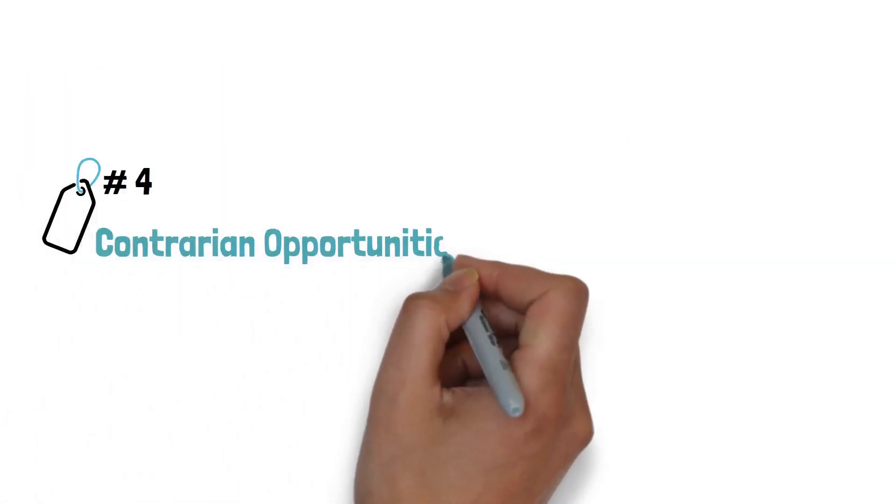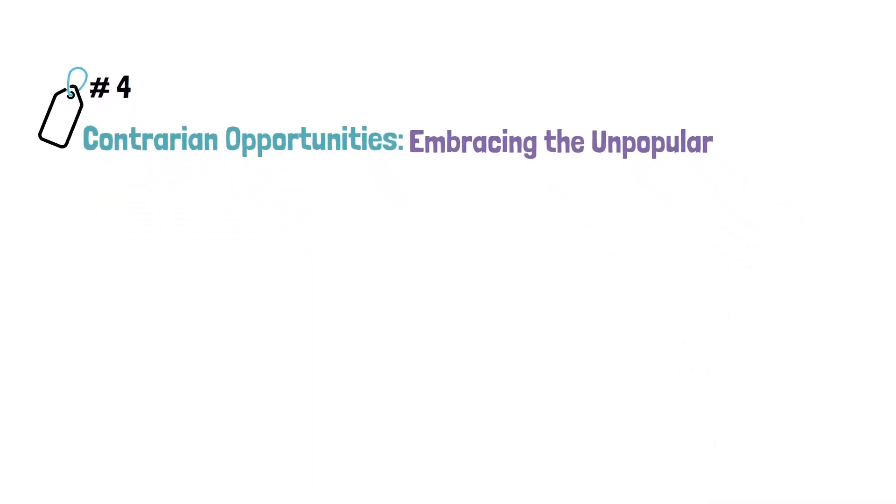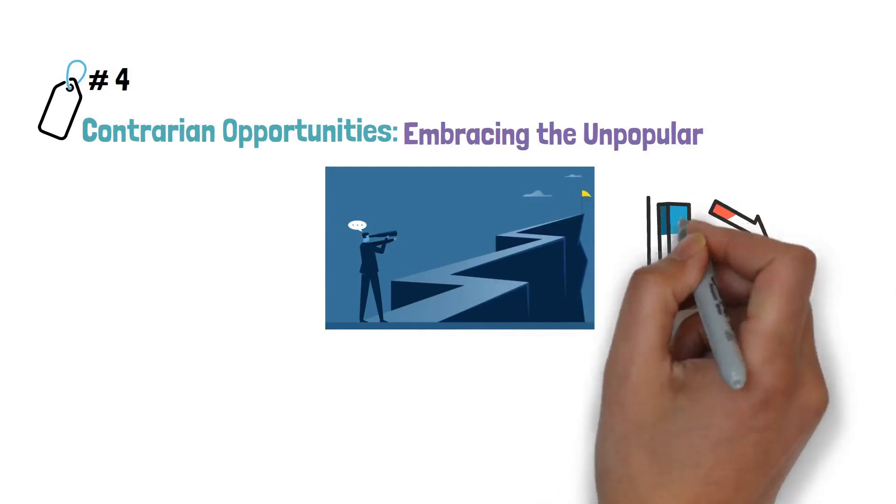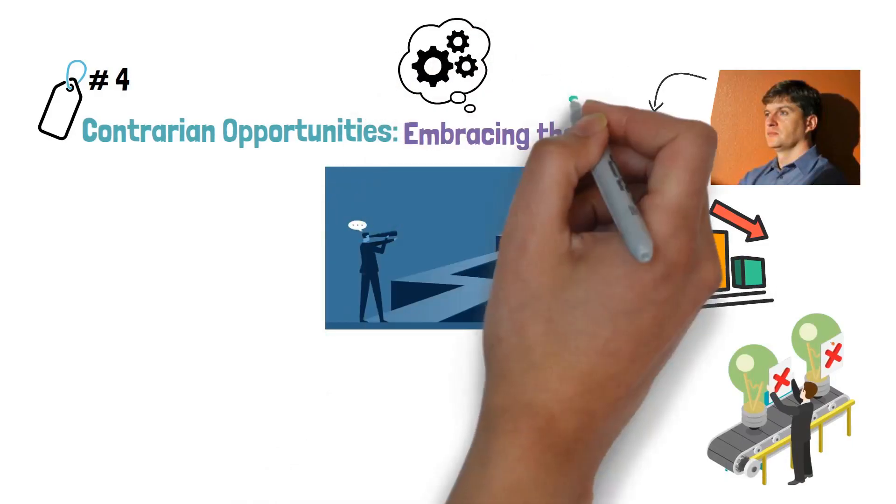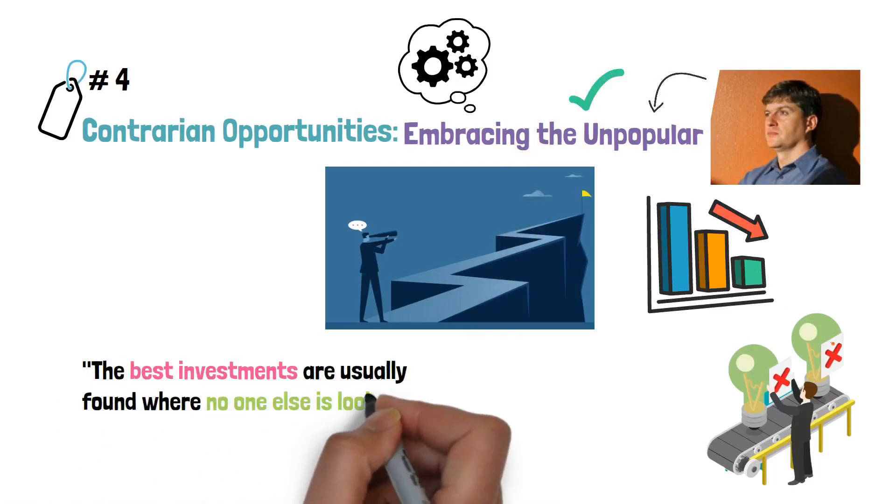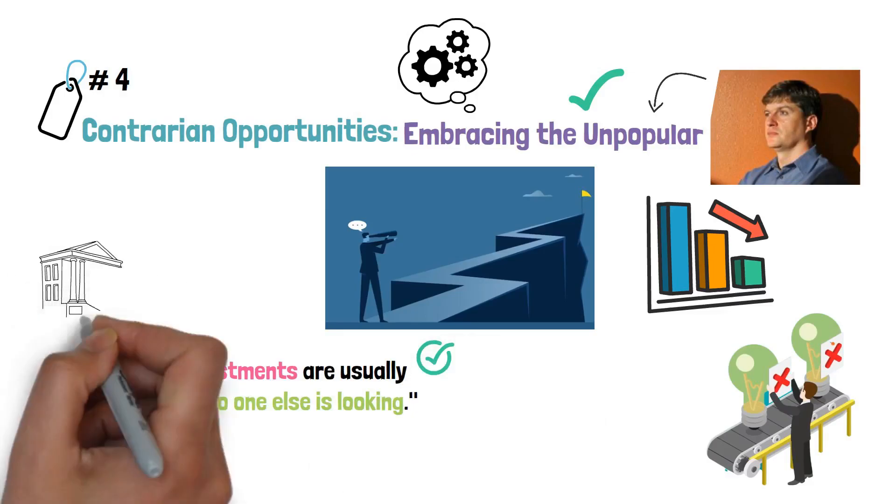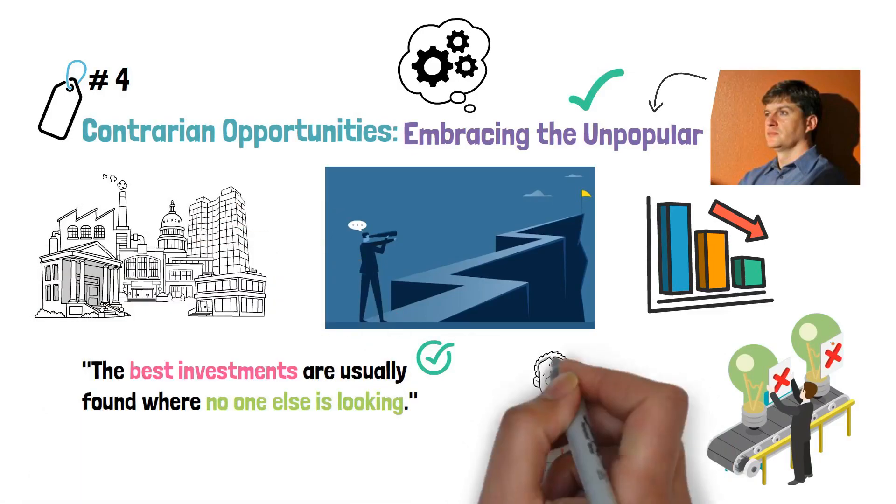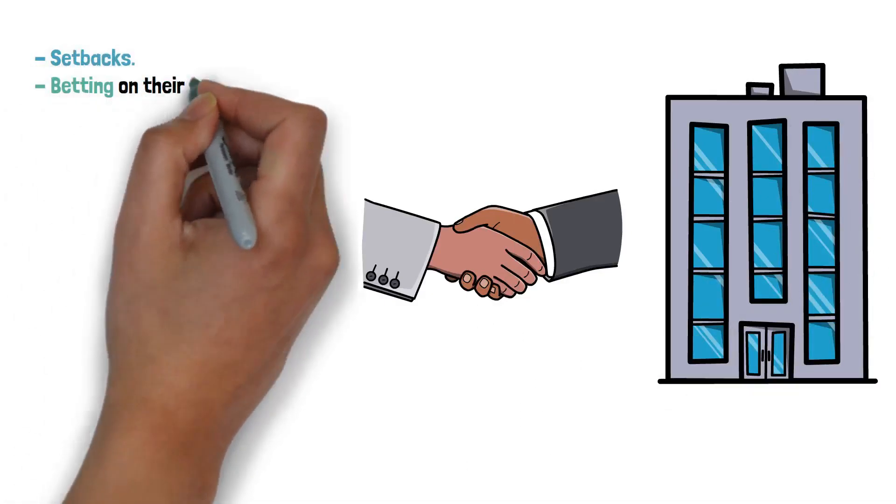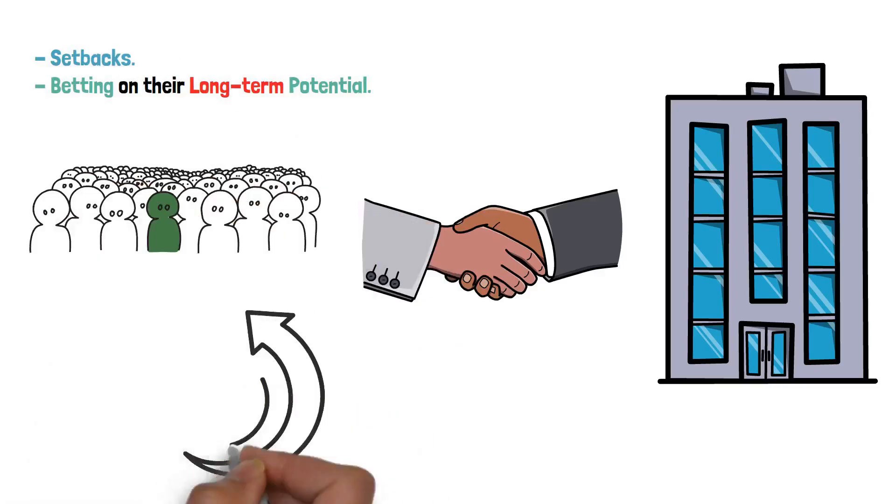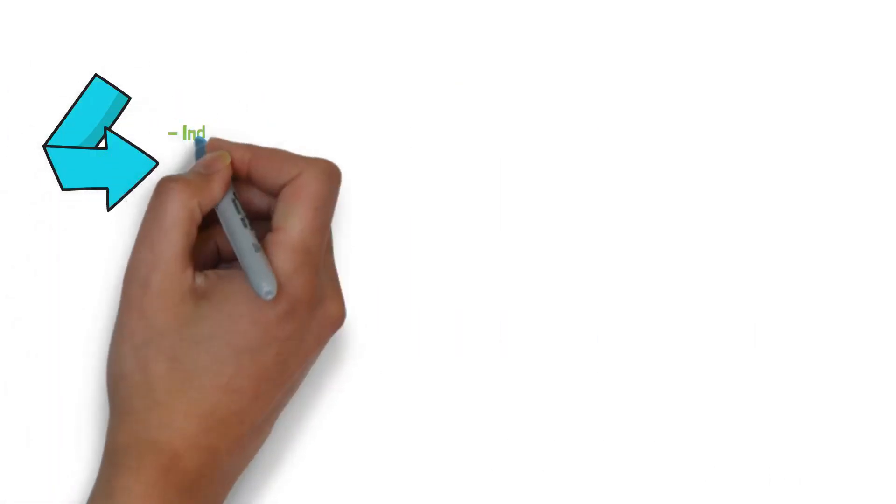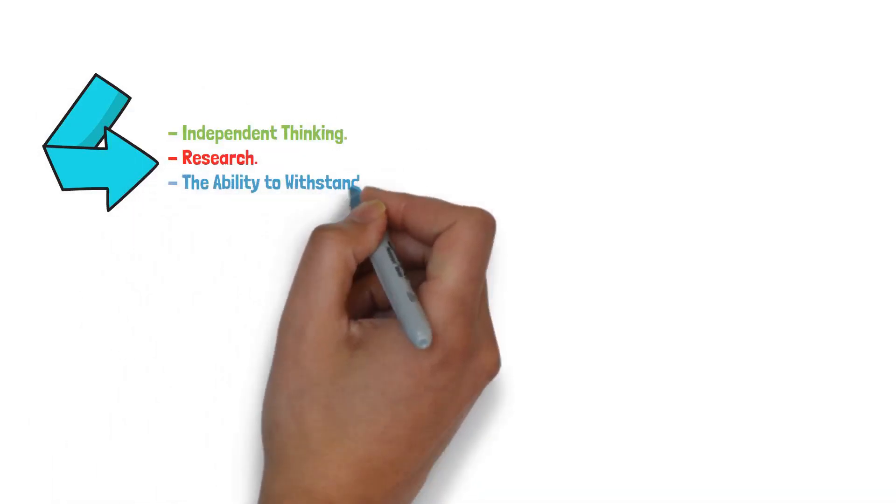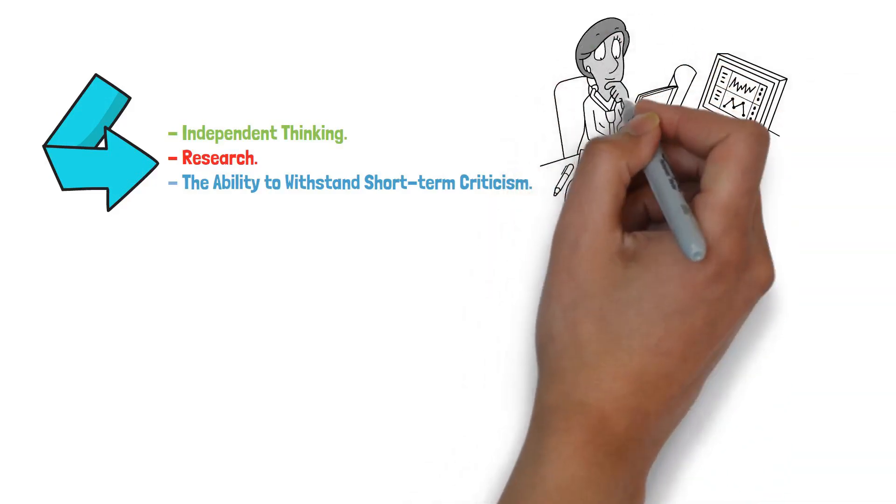Tip number 4: Contrarian Opportunities, Embracing the Unpopular. Contrarian opportunities arise when investors go against prevailing market sentiment and embrace undervalued assets that others overlook. Michael Burry, a renowned contrarian investor, emphasized the importance of this approach, stating, The best investments are usually found where no one else is looking. This quote highlights the potential for significant gains by identifying and investing in assets that are currently out of favor or misunderstood. Contrarian investors actively seek opportunities in sectors or companies facing temporary setbacks, betting on their long-term potential. By going against the crowd, they can capitalize on market inefficiencies and potentially achieve substantial returns. Embracing contrarian opportunities requires independent thinking, research, and the ability to withstand short-term criticism while patiently awaiting the market's recognition of the investment's true value.